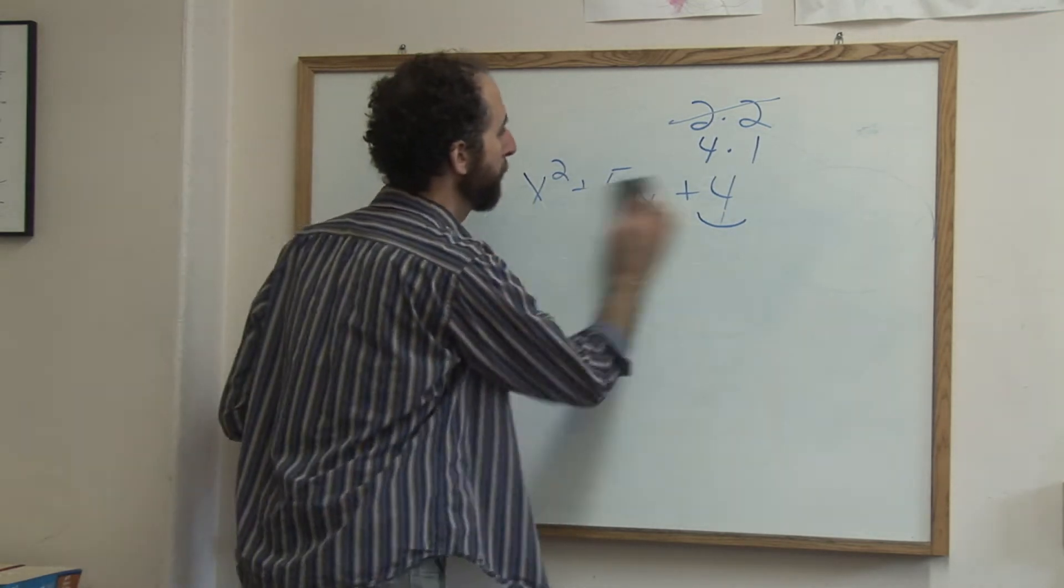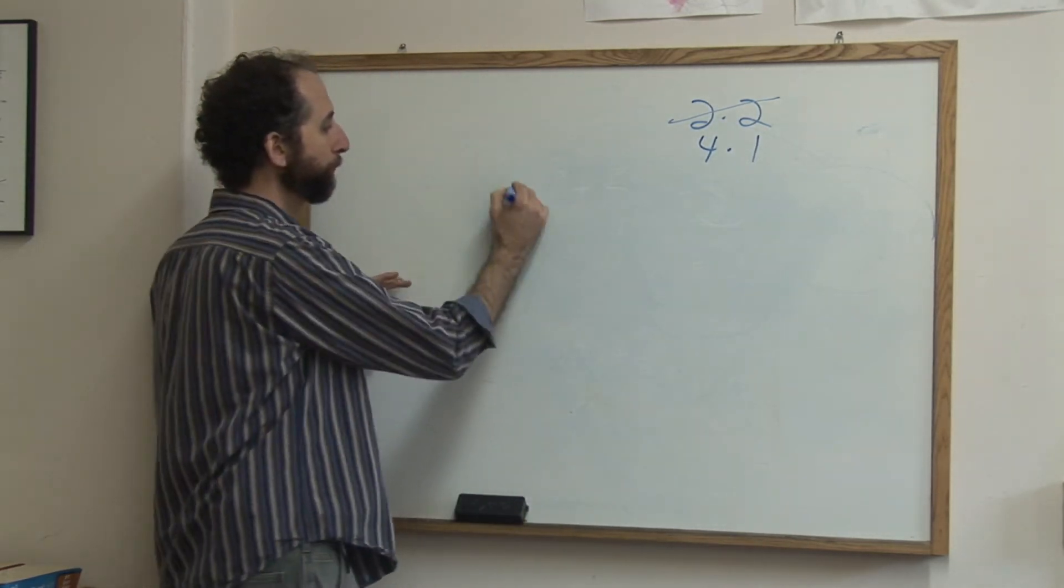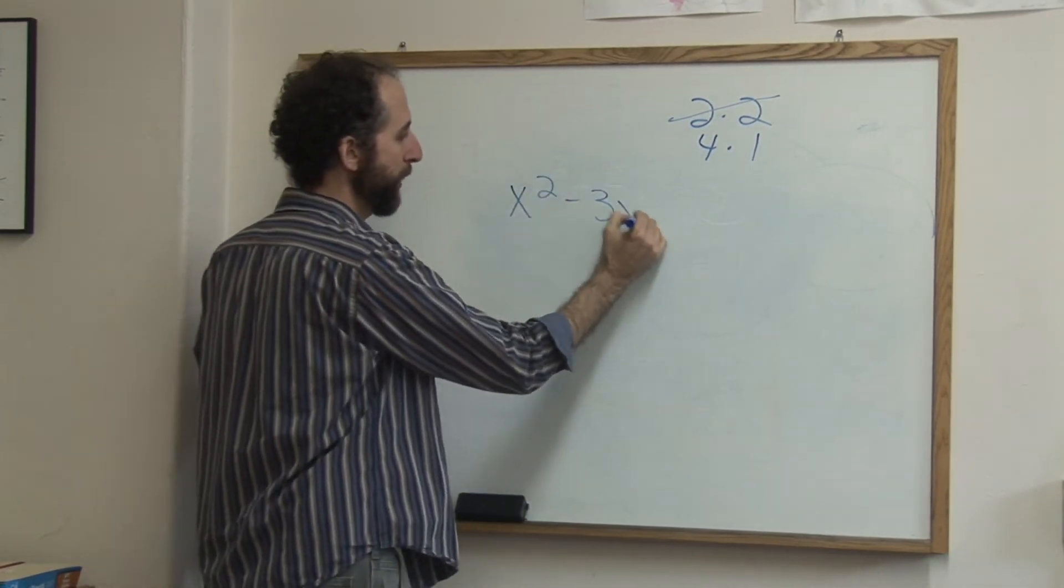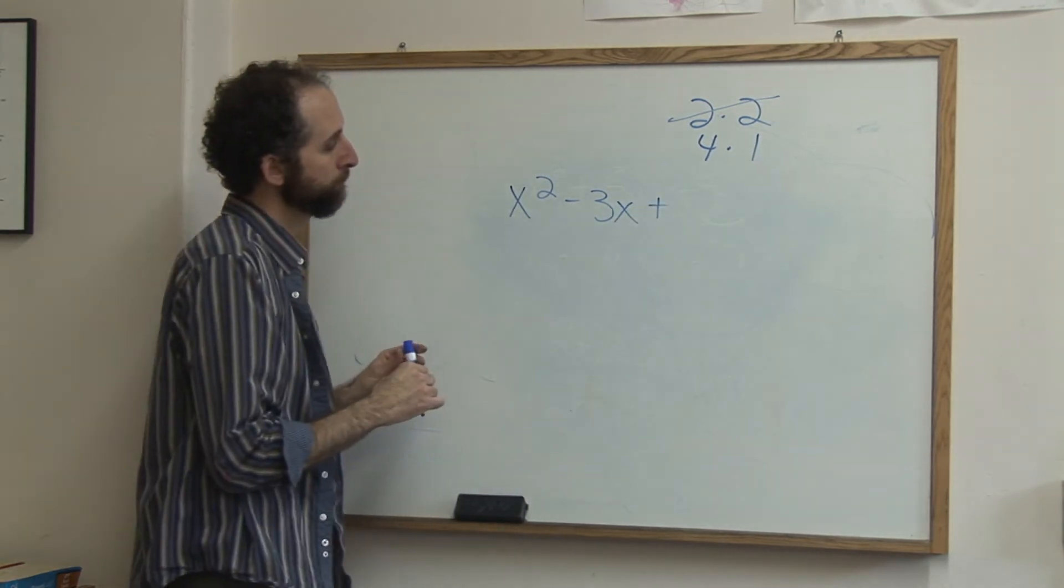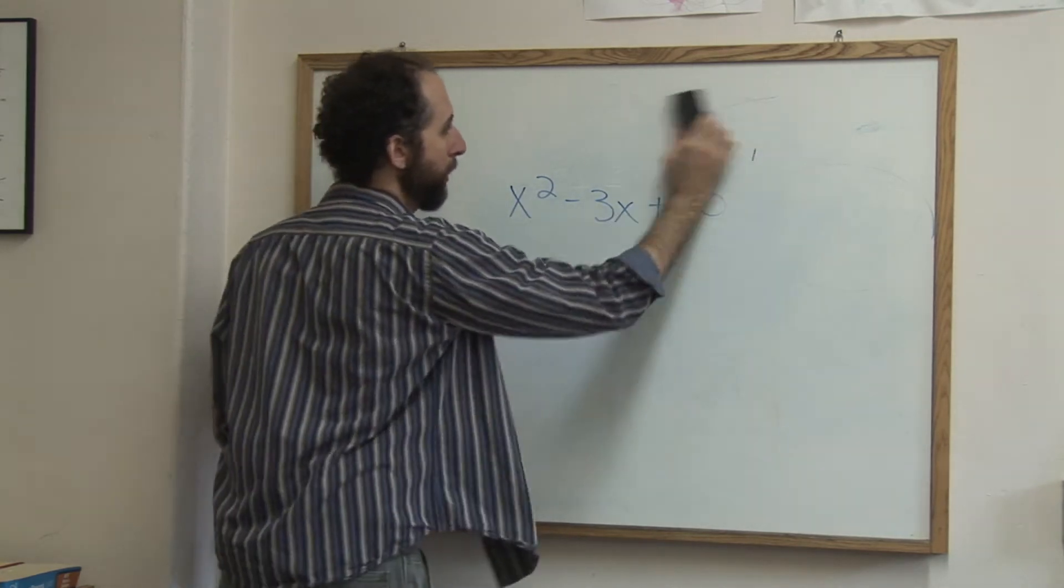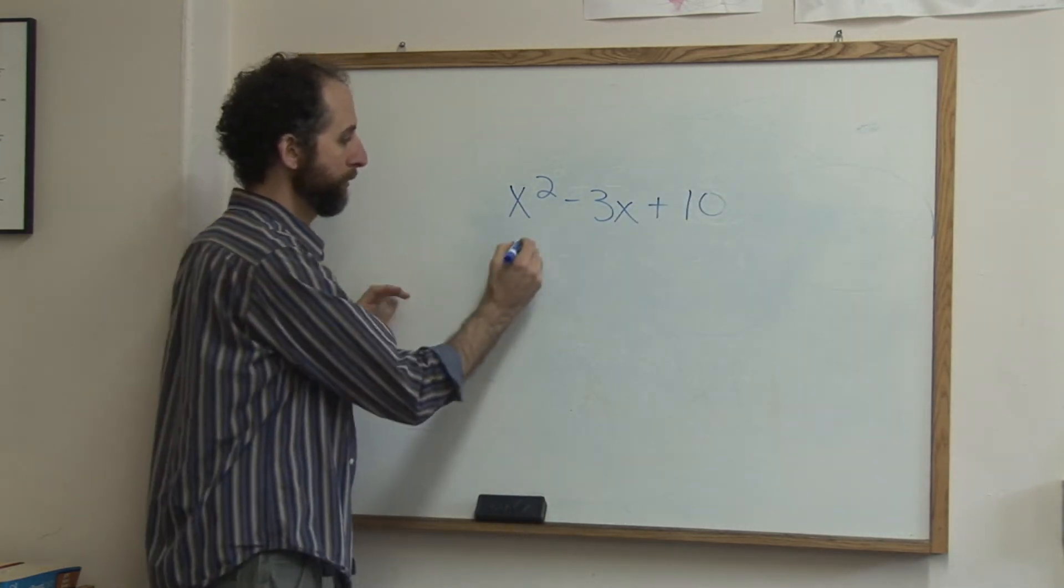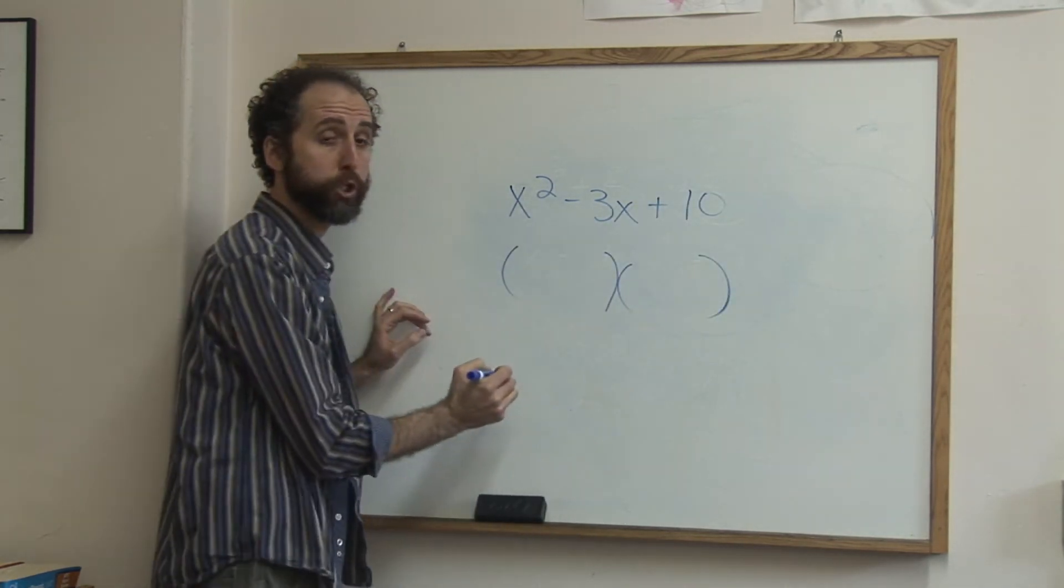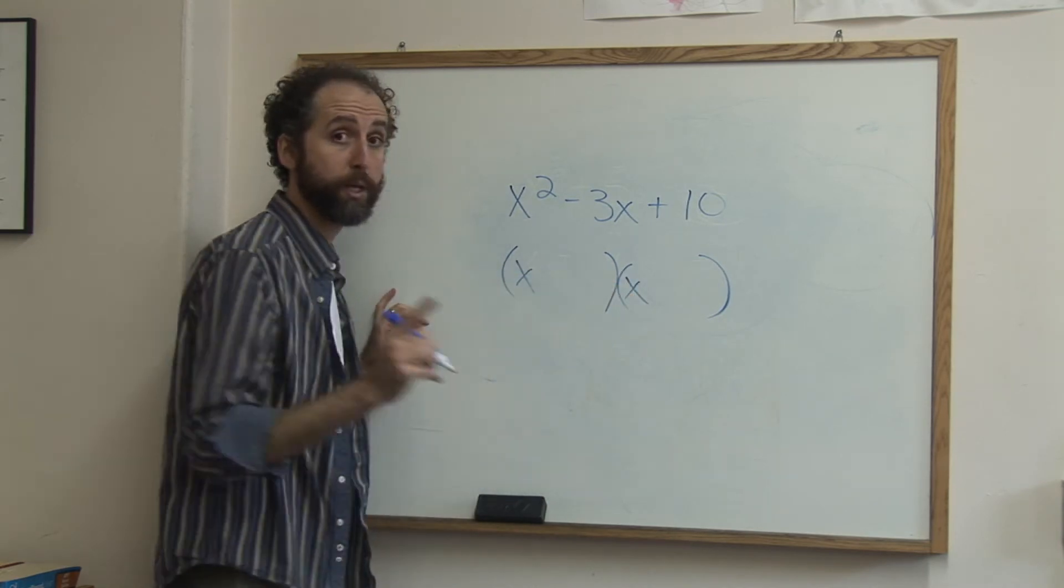Let's do one more example real quick. So let's say we had x squared minus 3x plus, let's see, 10. So remember, step 1, draw the parentheses. Step 2, put the x in x. Step 3, what two numbers multiply to be 10?